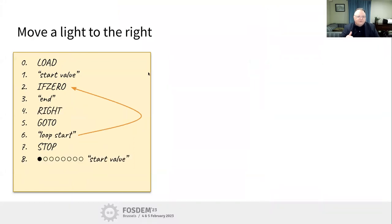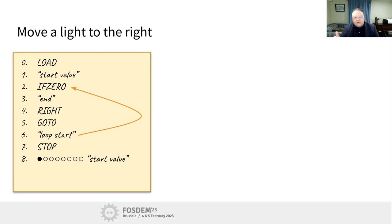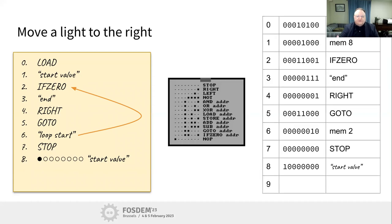Let's look at another one: moving a light from the left-hand side to the right-hand side using shift. Load a starting value - instruction 8 is the starting value on the left-hand side. Test if it's zero; if so, jump to end of program. If not zero, shift right by one using the right-shift instruction. Then GOTO back to the beginning of the loop. Instruction 7 is where the program ends, and counter 8 holds the starting value. This is a 9-byte program from 0 to 8.